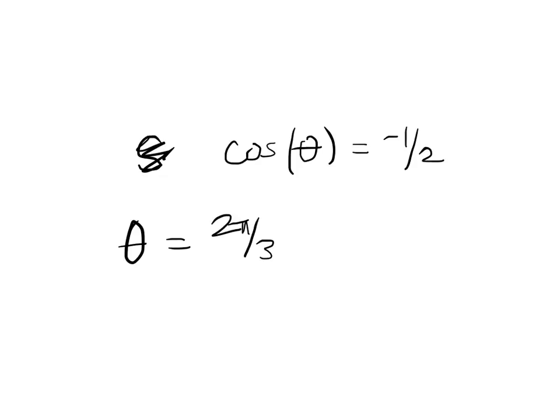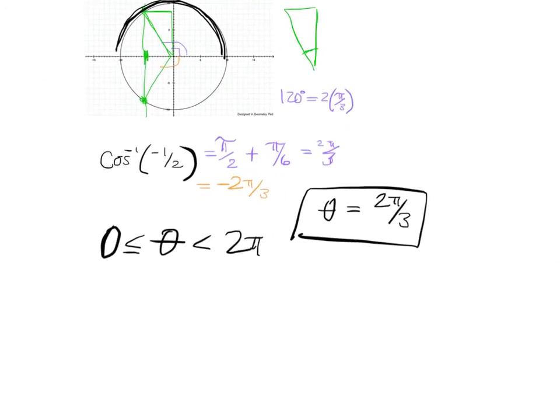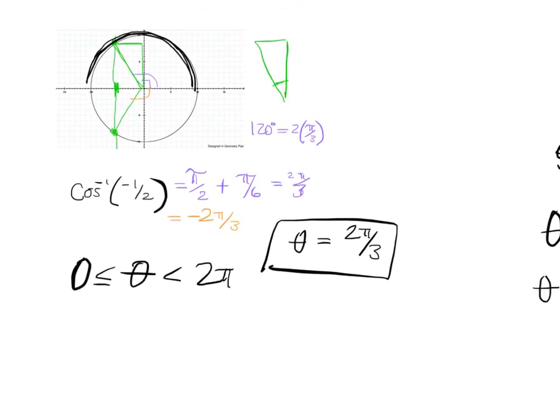To that answer, I can add any multiple of 2 pi. And the other answer we figured out was minus 2 pi over 3. And to that, I can add any multiple of 2 pi. So these are all of the solutions to this equation. That's different from doing specifically the function cosine inverse of negative 1 half.